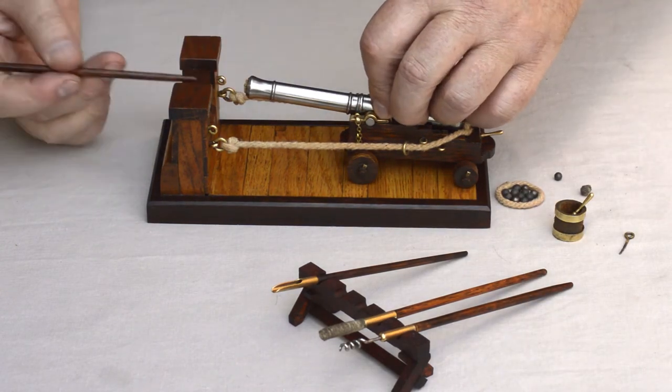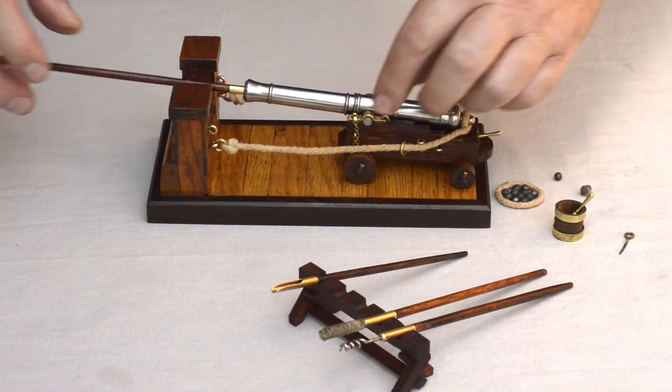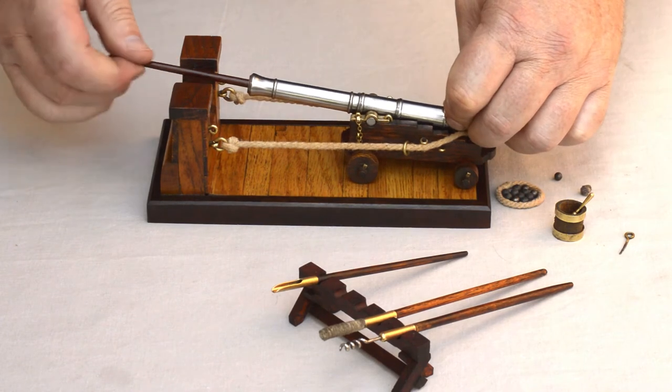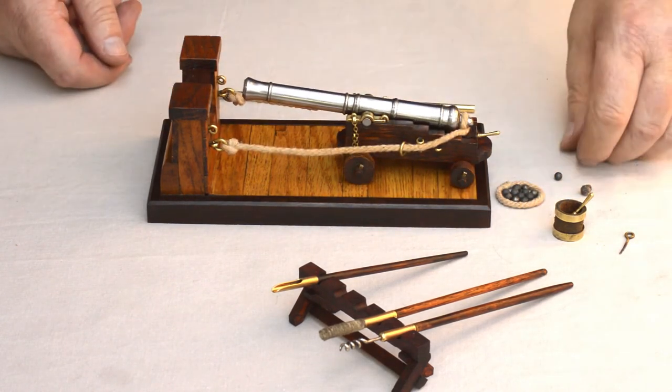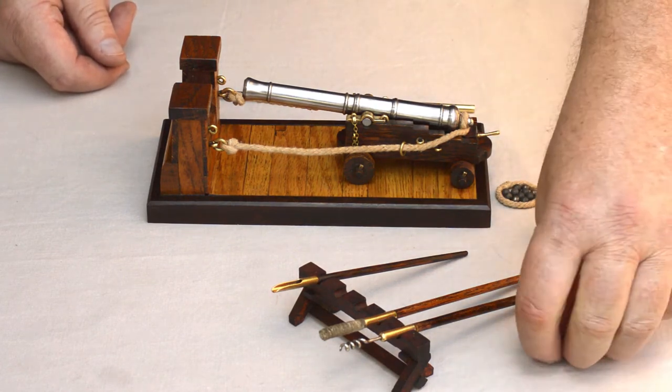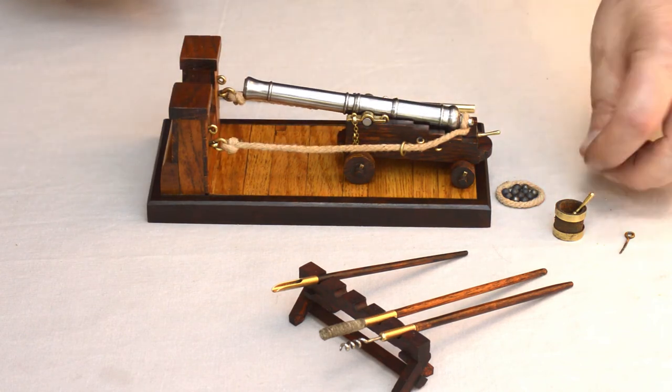You may have noticed me using my thumb to close the vent hole or touch hole during ramming or sponging. This is another means to make sure that any smoldering embers lingering in the barrel will die. A round shot would now be inserted into the barrel mouth along with wadding, and this again to be rammed home.